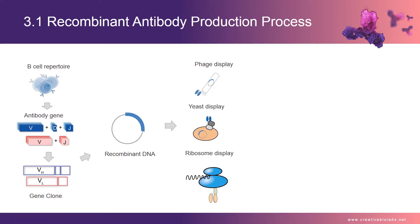Step 3: Choose an appropriate antibody display technology, such as phage display, which can screen small antibody fragments to obtain a large antibody library; or ribosome display, which can achieve a library capacity of 10^14 without limitation of transformation efficiency and can acquire a mutant antibody library.